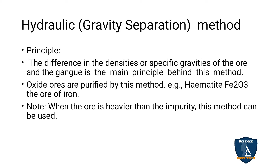The first method is the hydraulic method, also called gravity separation. The principle behind this method is the difference in density or specific gravity of the ore and the gangue. Gangue refers to the rocky impurities that need to be separated. Oxide ores are purified by this method. For example, hematite (Fe₂O₃), the ore of iron.